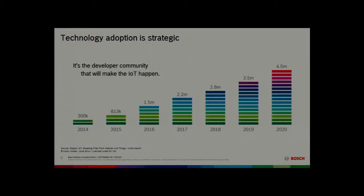In the IoT area, it's predicted that by 2020 there will be 4 to 4.5 million developers. It's about these developers thinking that's the best technology — not one manager somewhere saying that's good technology. It's about developers feeling comfortable with this stuff, saying it's easy to use and it's what we need.